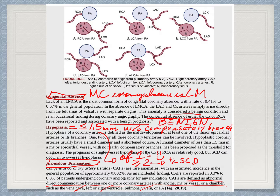Regarding hypoplasia: by definition, it is a vessel wall diameter less than or equal to 1.5 mm without compensatory branches. If there is hypoplasia of just one coronary, this may carry a benign prognosis and is not generally associated with sudden cardiac death. However, if there is hypoplasia of two or more vessels, it is associated with sudden cardiac death.